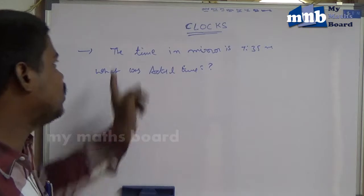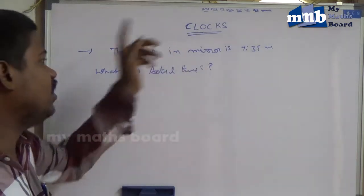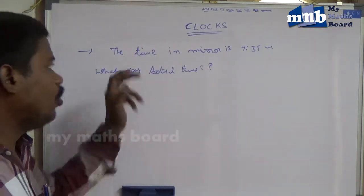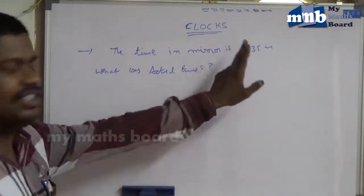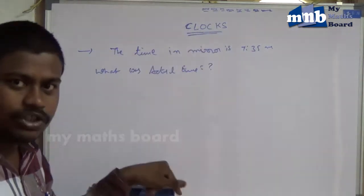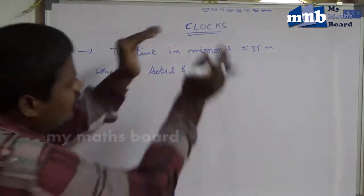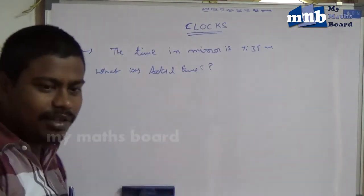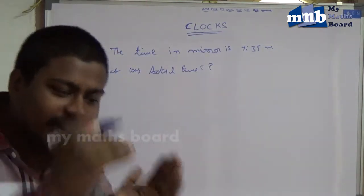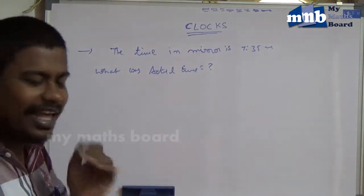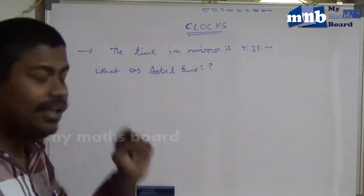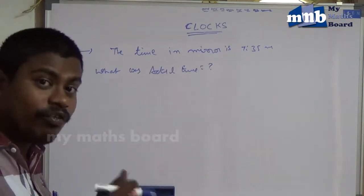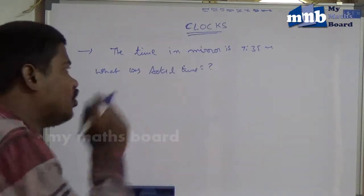In the later process, we are given the actual time and we have to calculate the mirror image. But in this question, the mirror image is given — that means the time as shown in the mirror is given — and we have to find out the actual time.